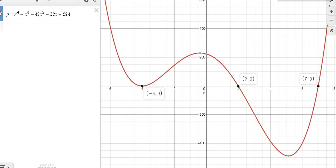But I can see that I get roots at negative 4, at 2, at 7, and that's it. So 4 roots.